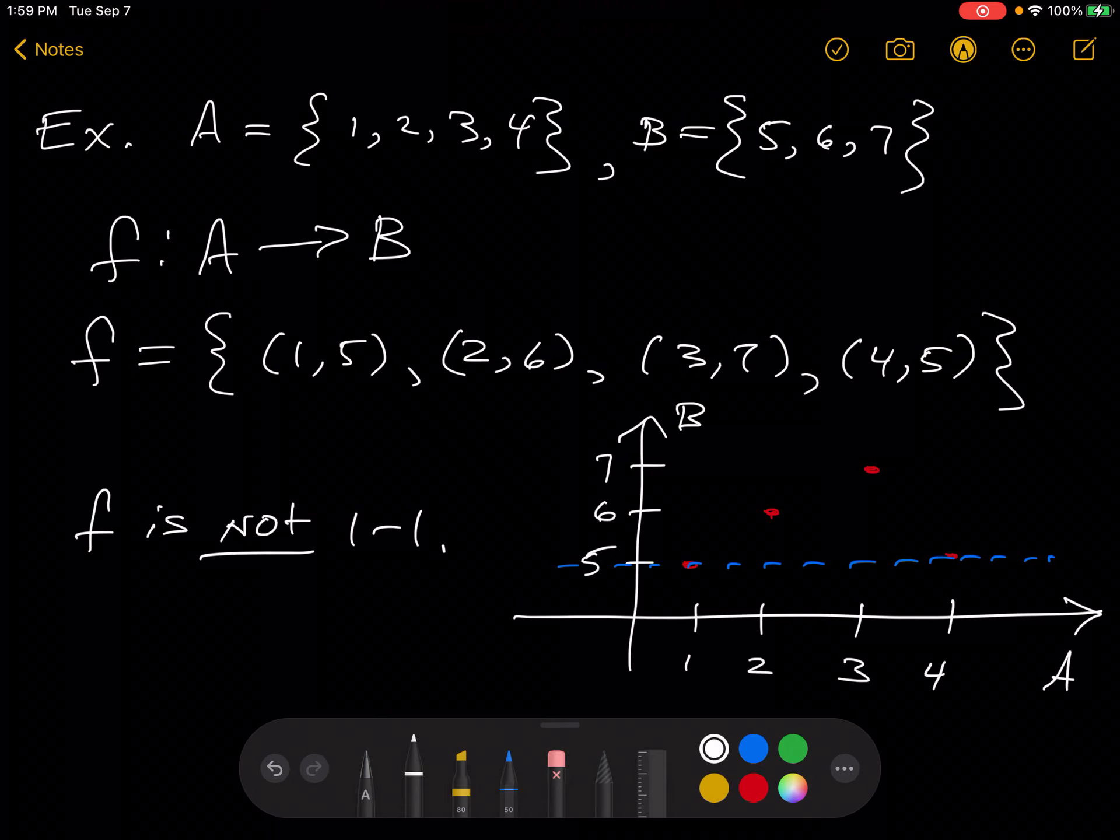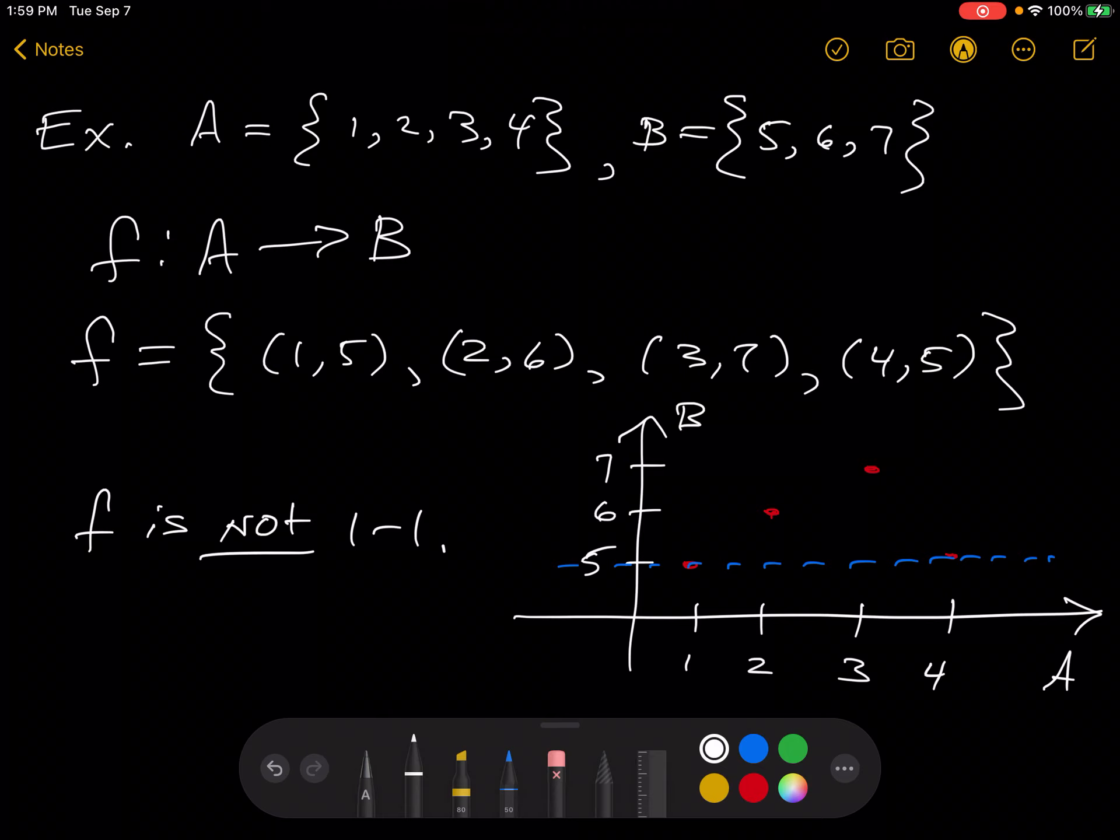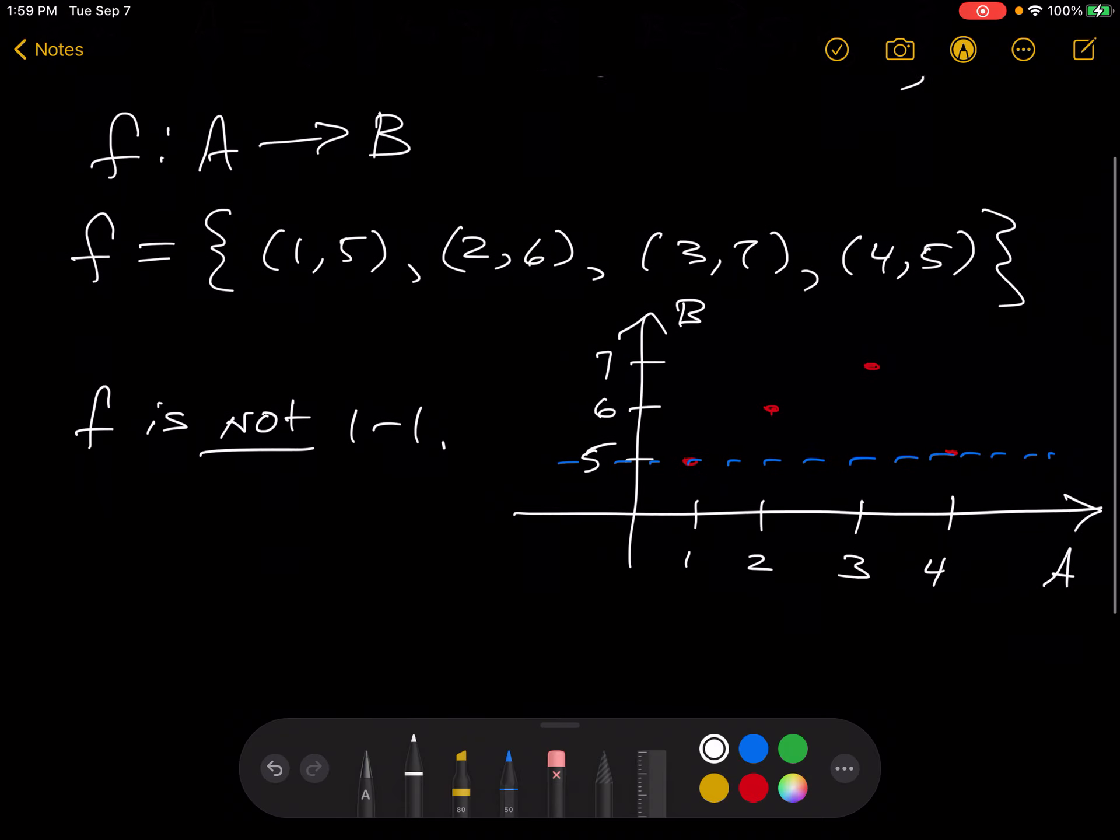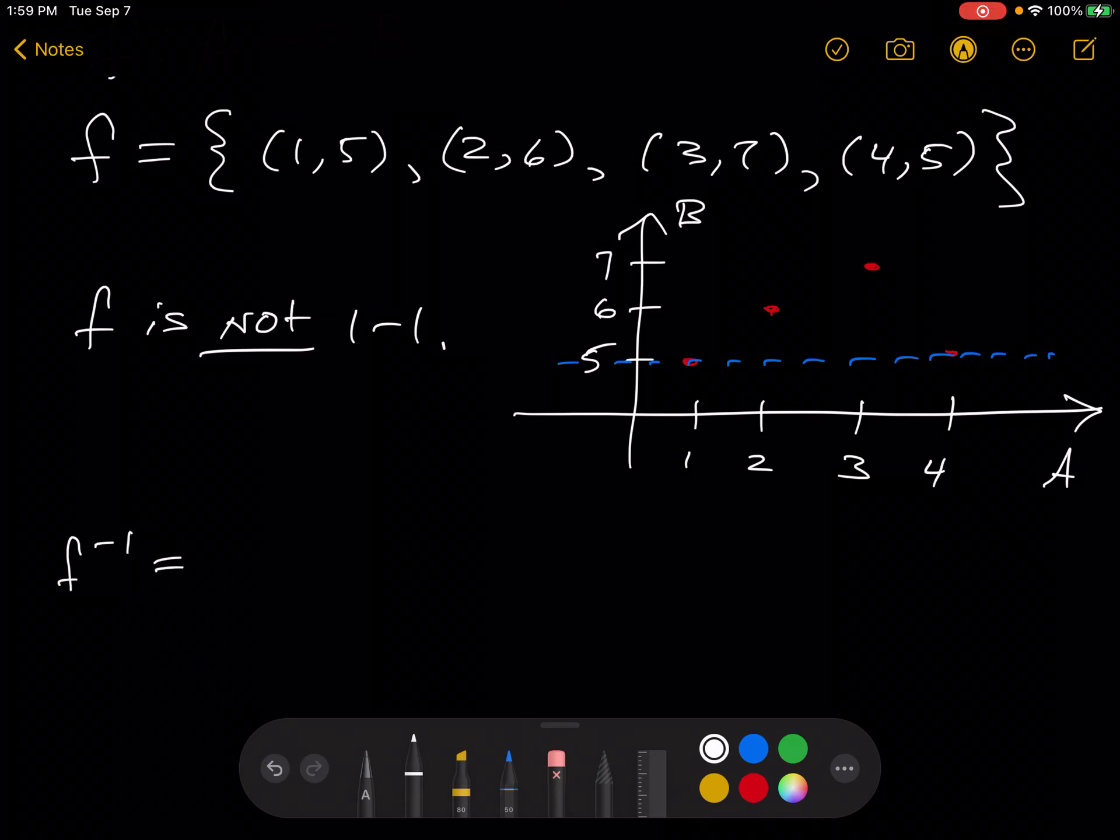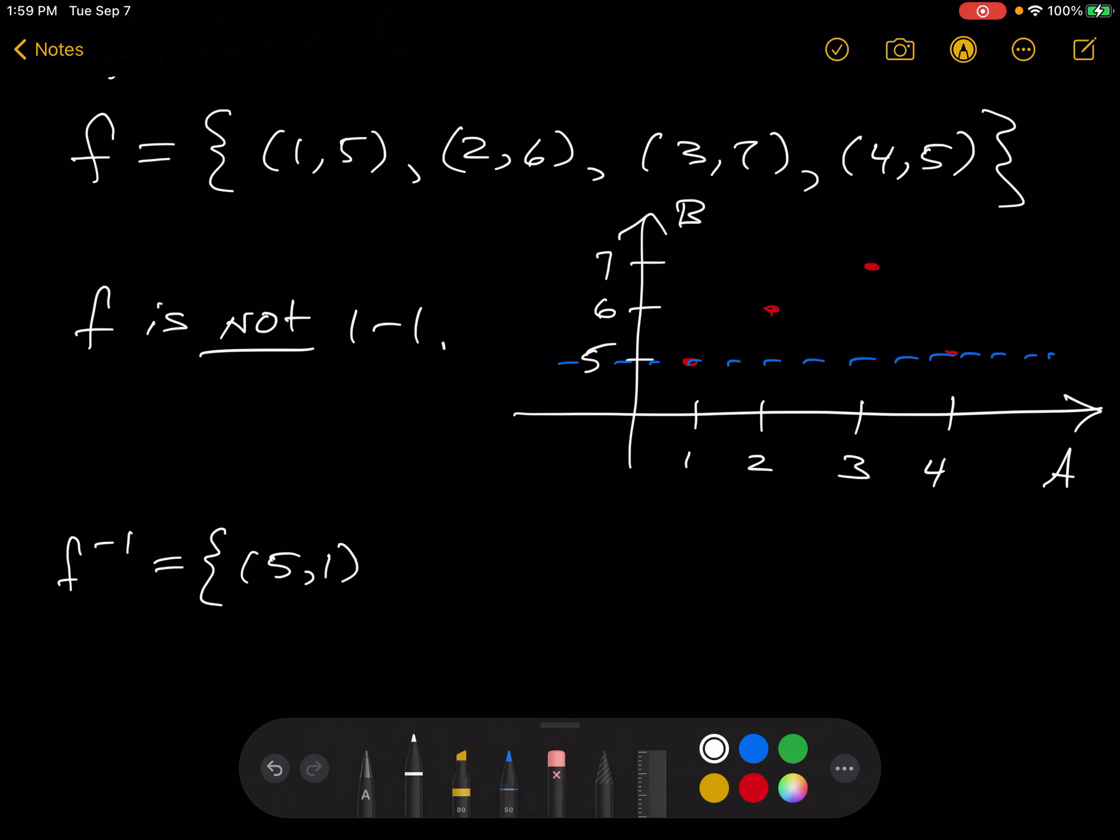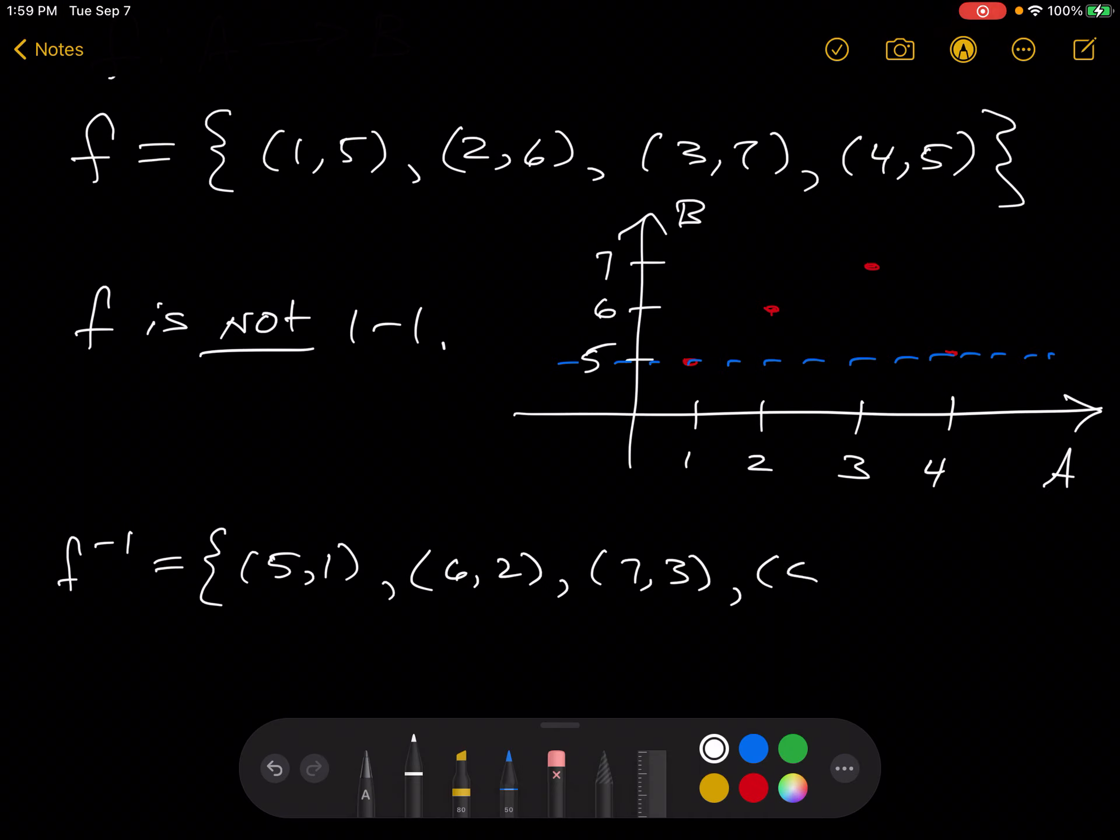So now let's consider f inverse. f inverse, remember, is the flip of the ordered pairs. So you have 5, 1, 6, 2, 7, 3, and 5, 4.